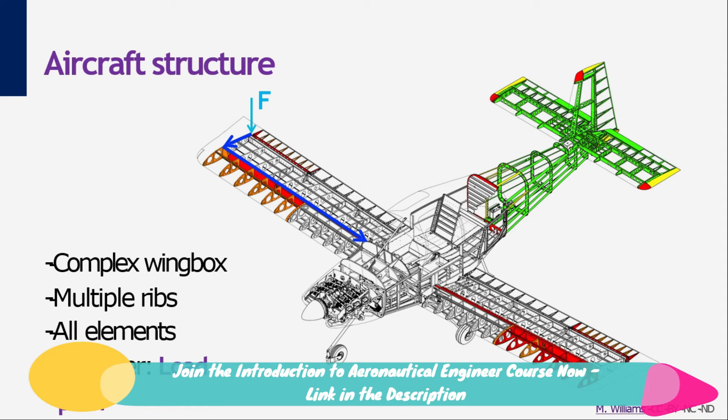When a load is applied at the tip of the wing, the structure should transfer this load to the virtual center of gravity of the plane to make equilibrium with other forces. Therefore the structure should provide a load path. In this case, first the load is transferred by the rib to the main spar, and next the main spar transfers the load to the center of the aircraft.